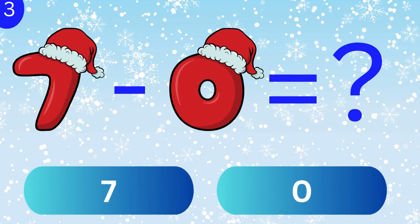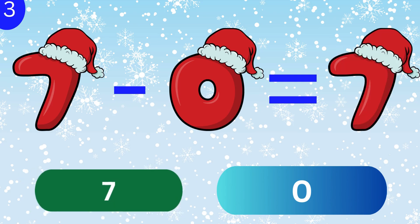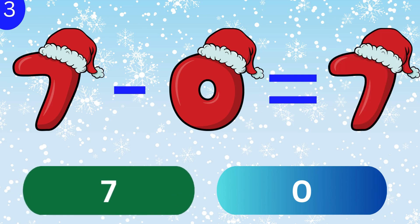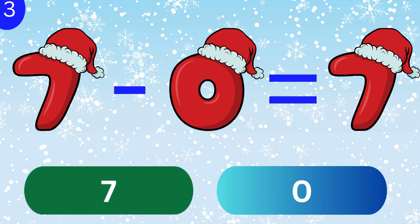What is 7 minus 0? 7. 7 minus 0 equals 7.